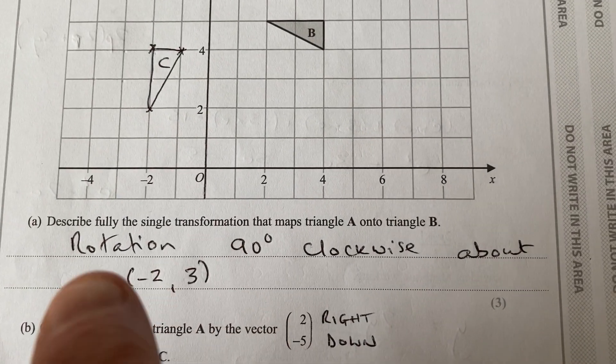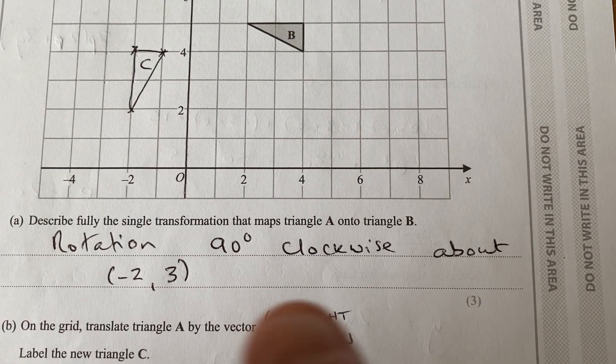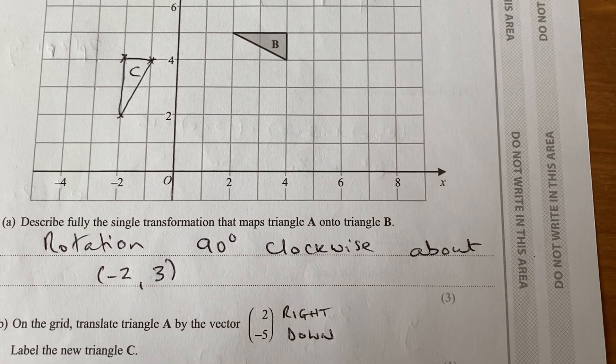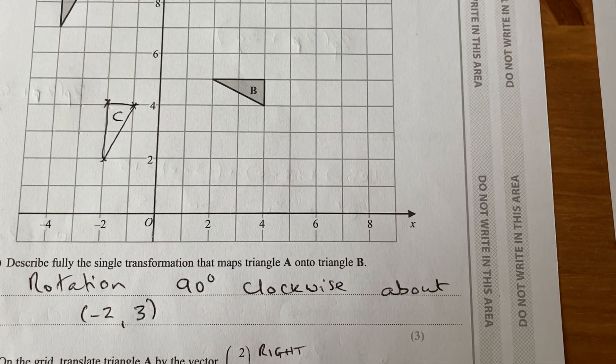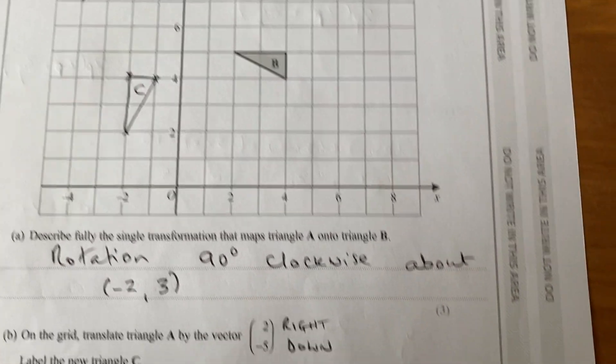So fully described, it's a rotation 90 degrees clockwise about the point two, three. Like I say, stick a compass in and hold the point down on the piece of paper normally.